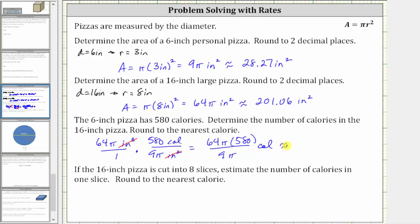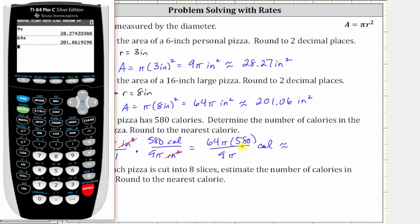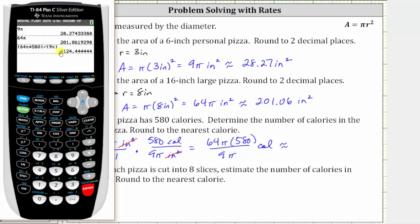Going back to the calculator, we need the numerator in parentheses: open parenthesis, 64 pi times 580, closed parenthesis, divided by nine pi — also in parentheses. Without parentheses around nine pi, we'd get the wrong answer because we would divide by nine and then multiply by pi. Because there's a four in the tenths place, we round down — the number of calories in the 16 inch pizza is approximately 4,124.